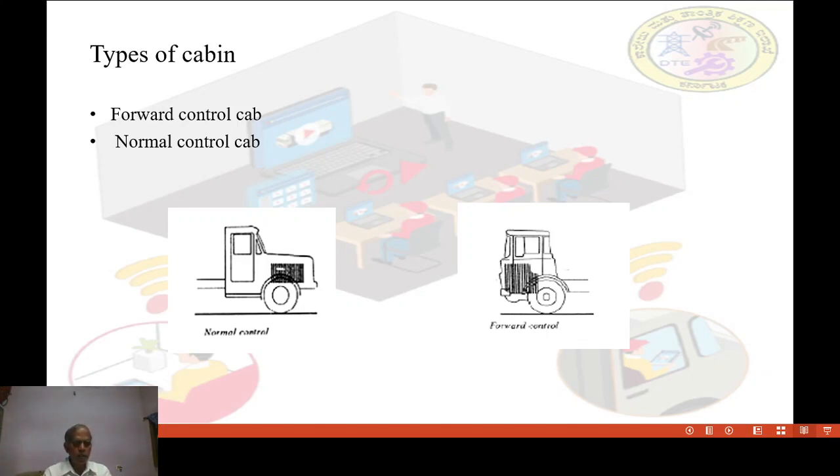Next one is forward control cabin. Forward control cabin, as shown in the figure, the engine is located either at the side or below the driver's cab. This type has its cab built over the engine and has the advantage of additional length available for payload and better angle of vision. Its disadvantage includes less cab space at floor level and difficult for engine maintenance.